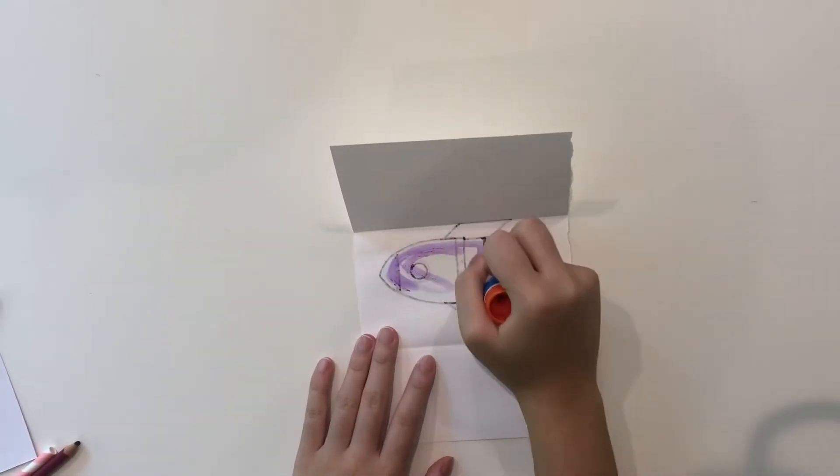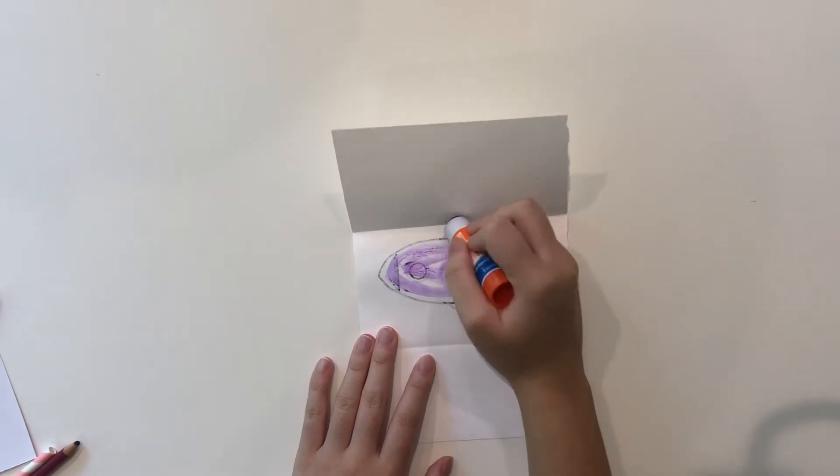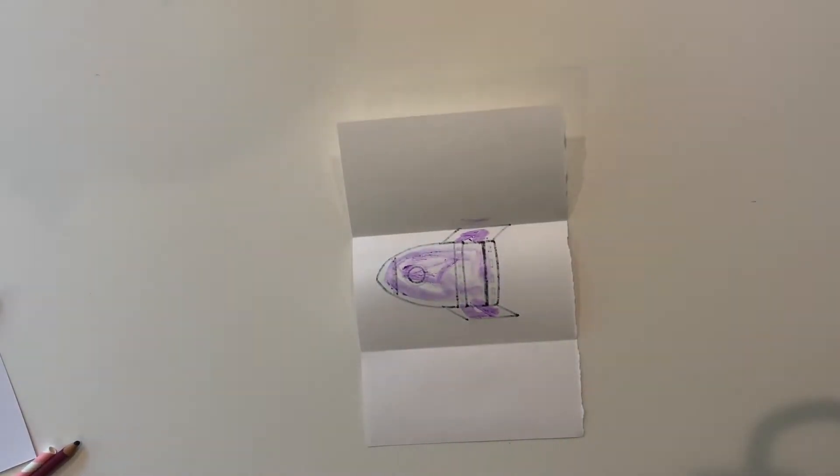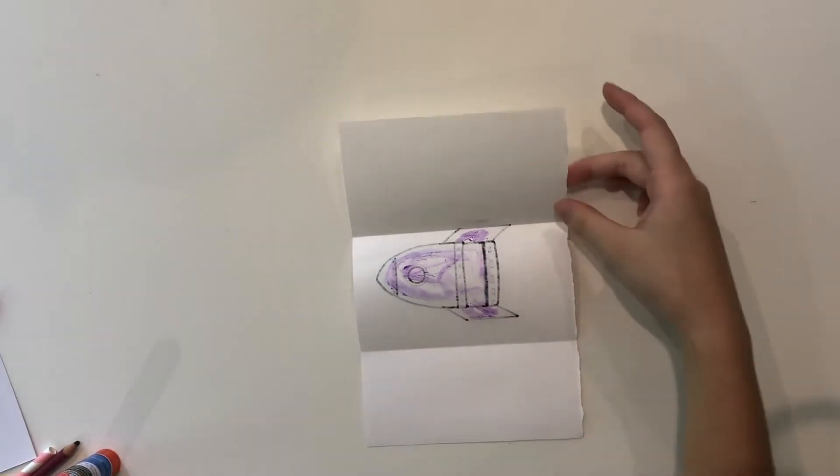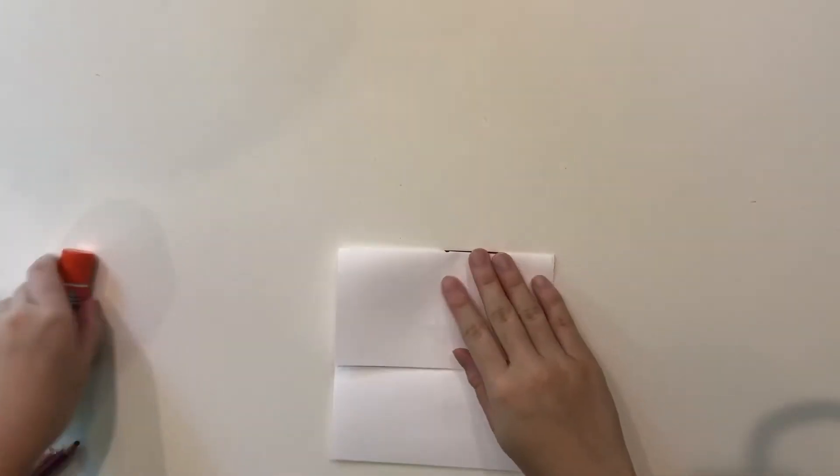Add glue to the back of the spaceship. We want the spaceship to have more paper so fold the paper down to create a second layer.